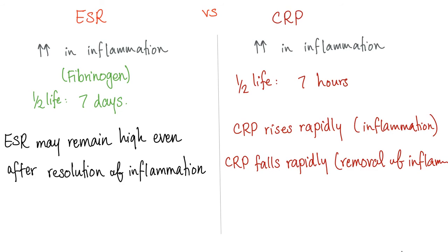Let's compare ESR and CRP. ESR is not technically an acute phase reactant — it's not secreted by the liver, it's produced in the lab — but it behaves similarly: it increases in inflammation and decreases after acute inflammation resolves. CRP also increases in inflammation. But there is an important difference.